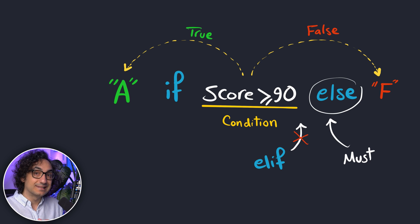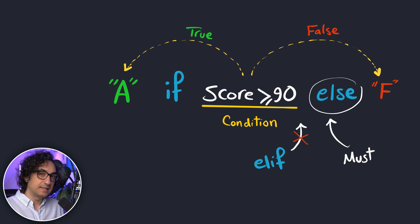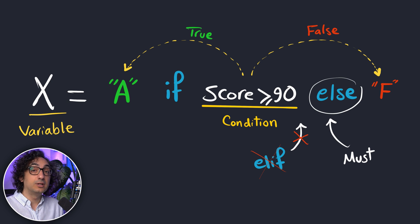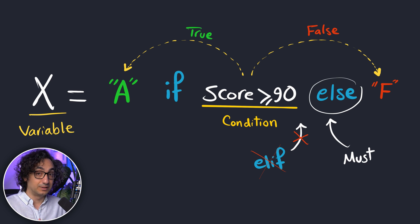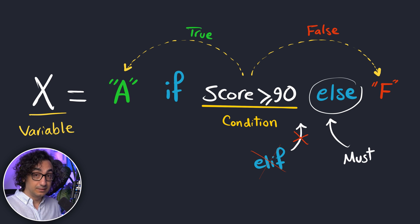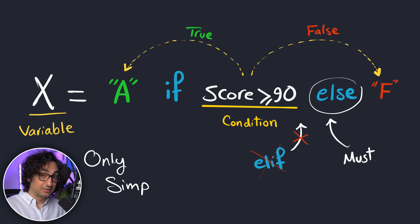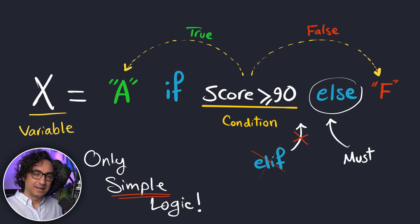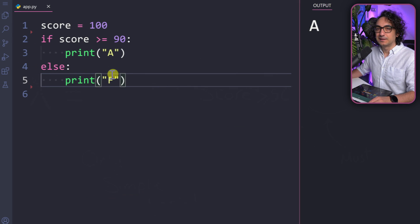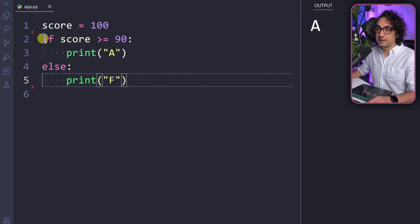There's one more amazing thing: the output of this inline if statement can be stored in a variable. So it is a quick expression to calculate the value and then store it in a variable. As you can see, it is very powerful, simple, readable, and easy to write. But there is a trade-off — you can only use it if the logic is very simple. Let's go and practice.